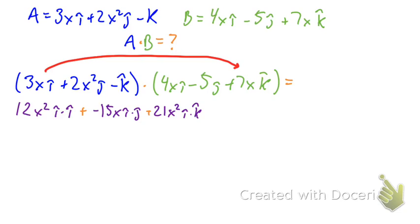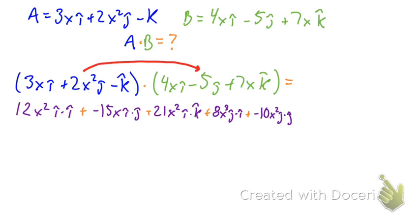Then we have to distribute the second term inside of vector A, so we do 2X²j times the 4Xi and that gives me 8X³ j·i. Then we take that times the next term and we get -10X² j·j, and then we take the middle term times the last term and we get 14X³ j·k.